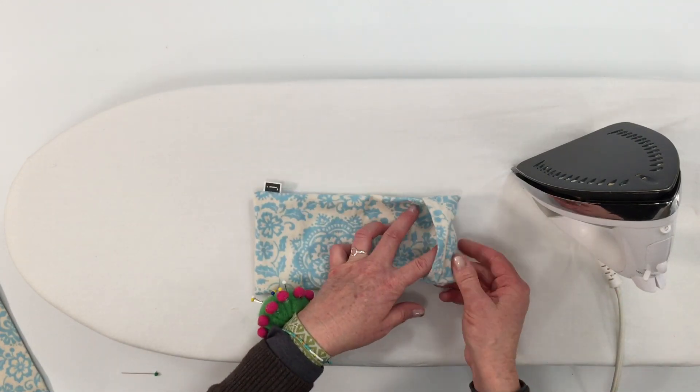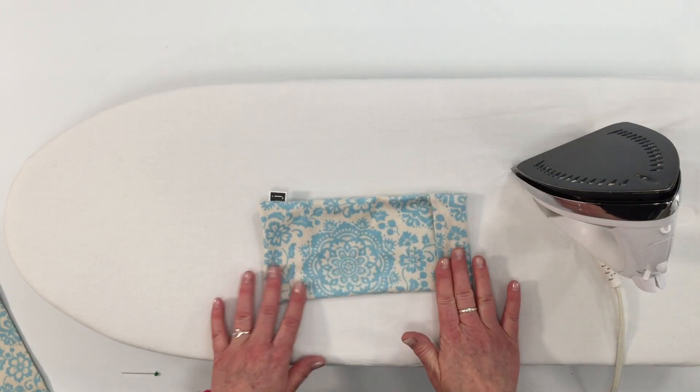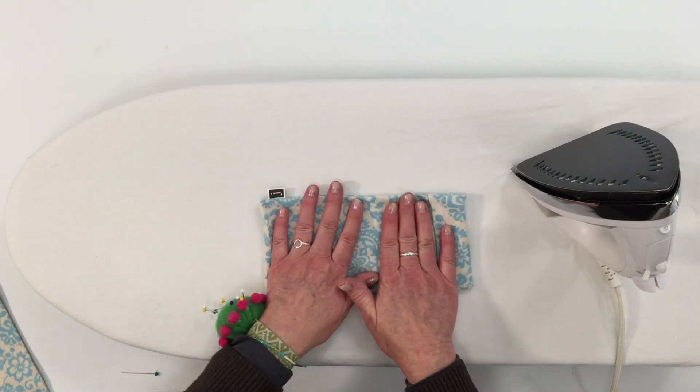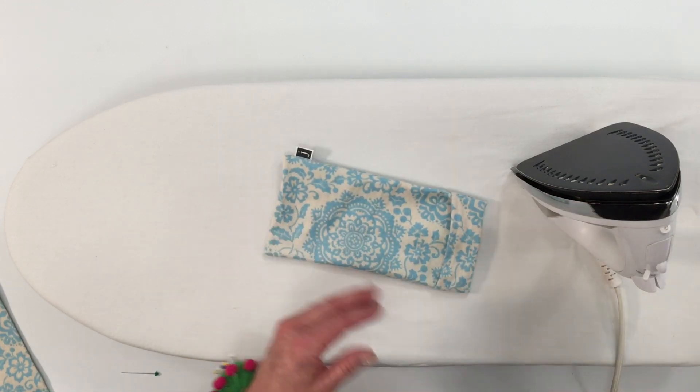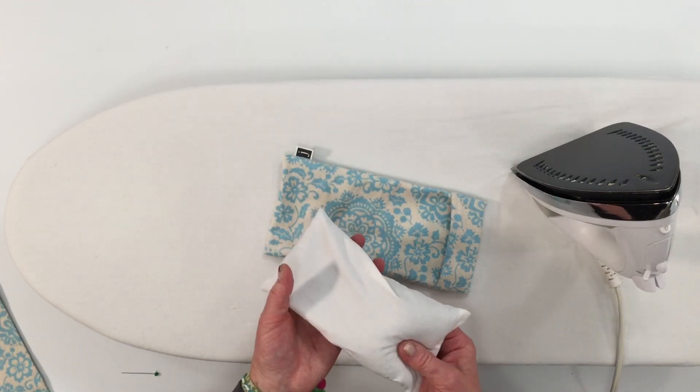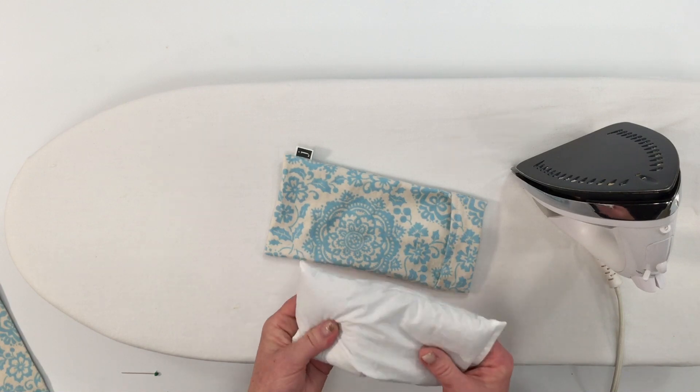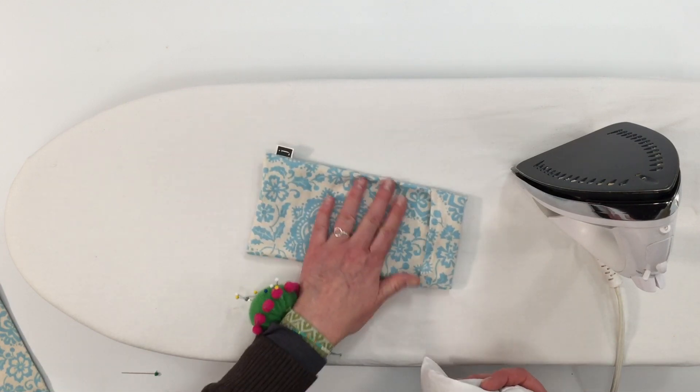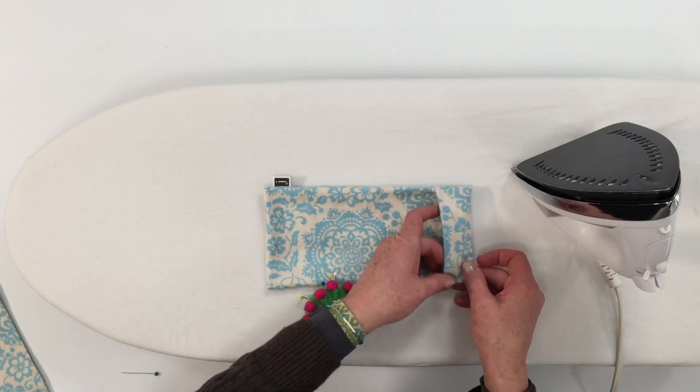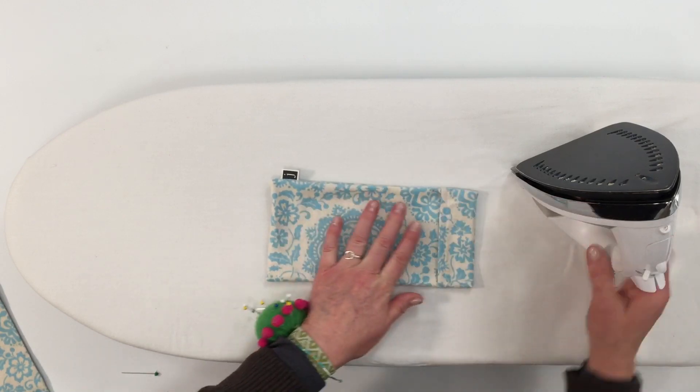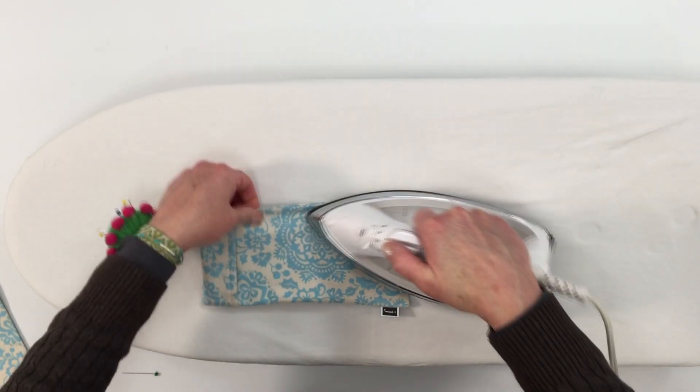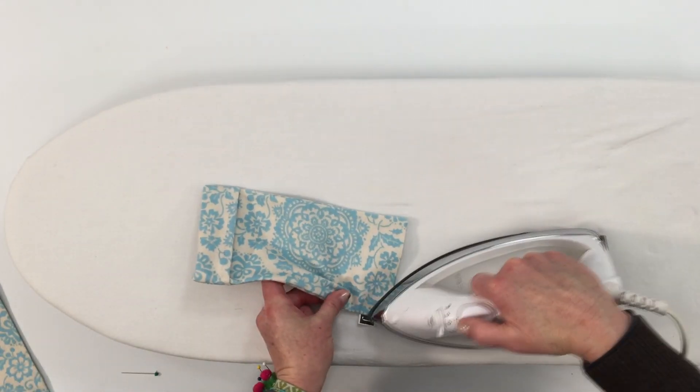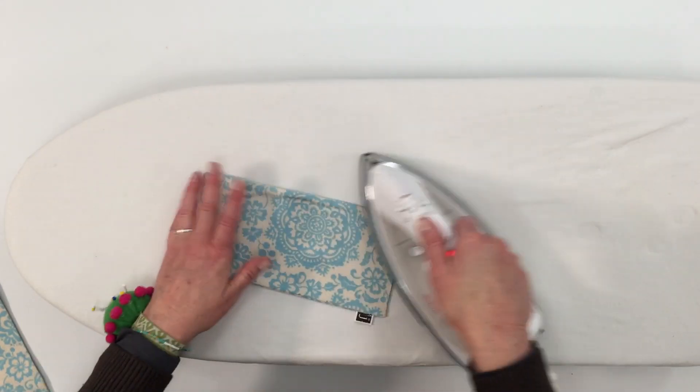There's your flap. You can take this off and wash it. You can wash the outer bag but do not wash the inner bag. You don't want to wash your rice or your flax seeds. That's what's so wonderful about these slip covers. Let's just give it a good press.